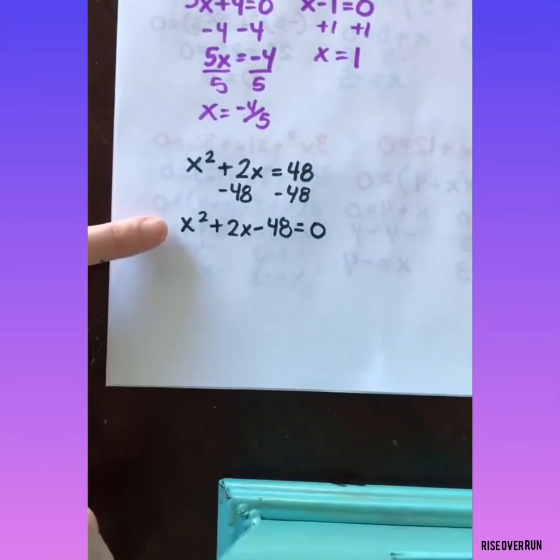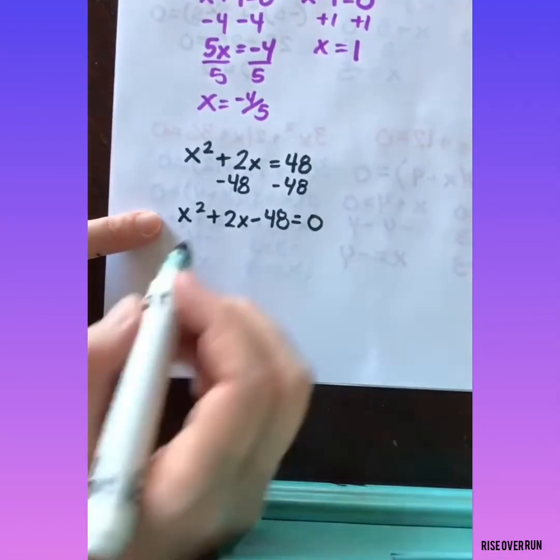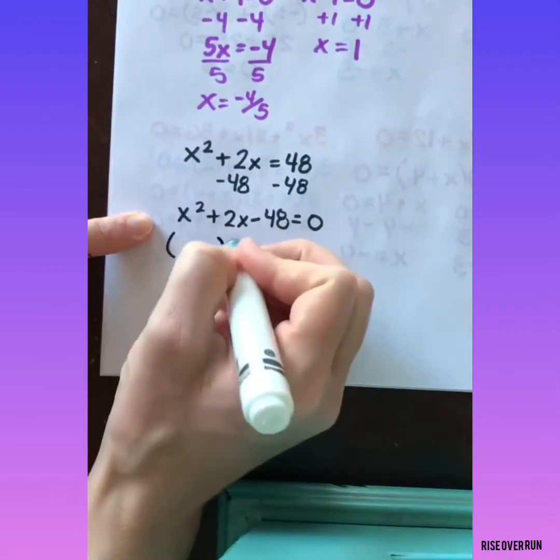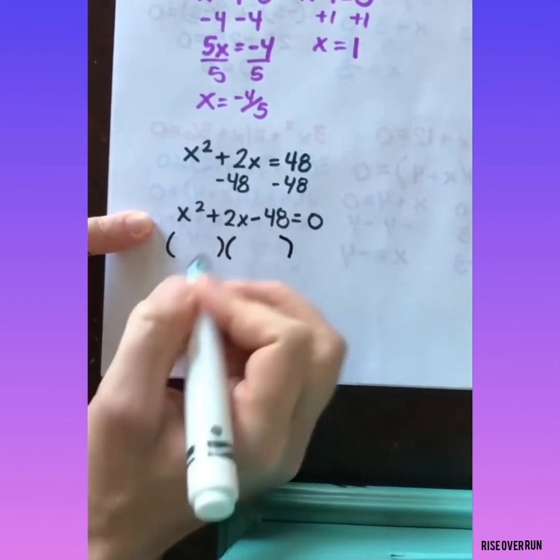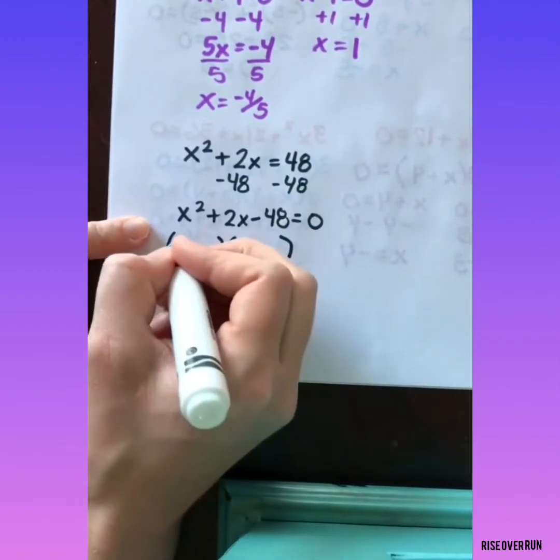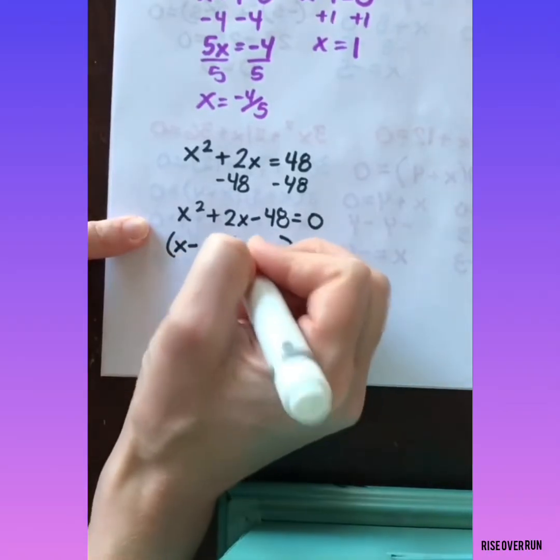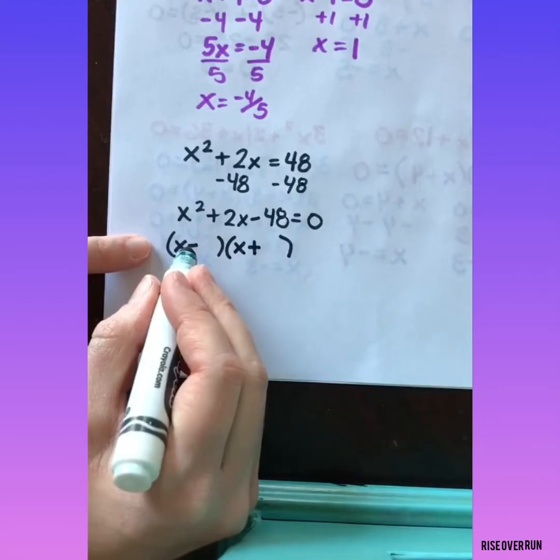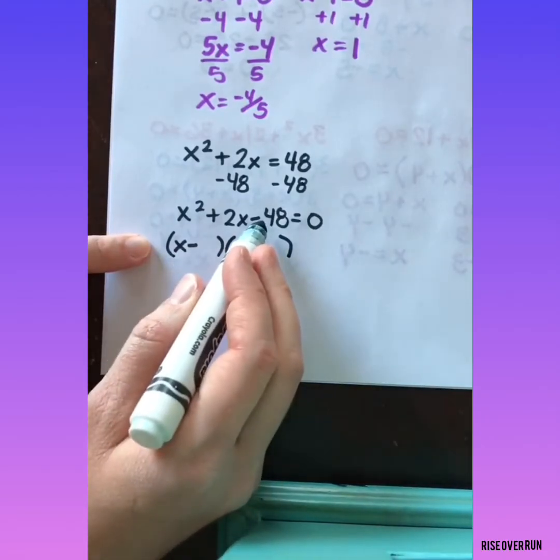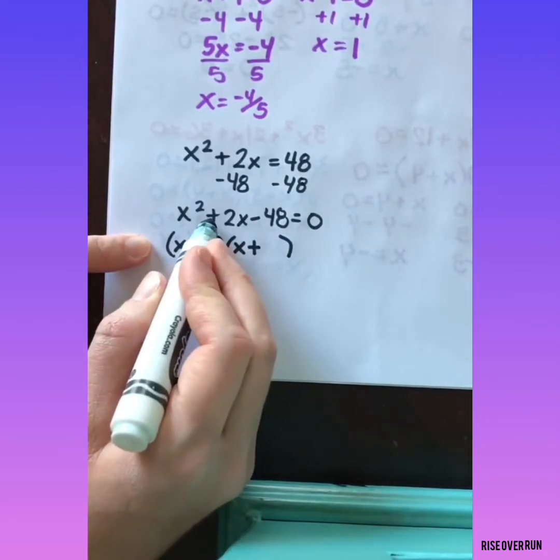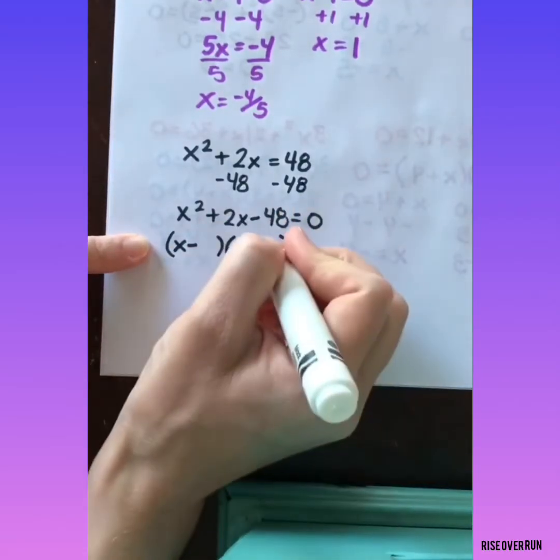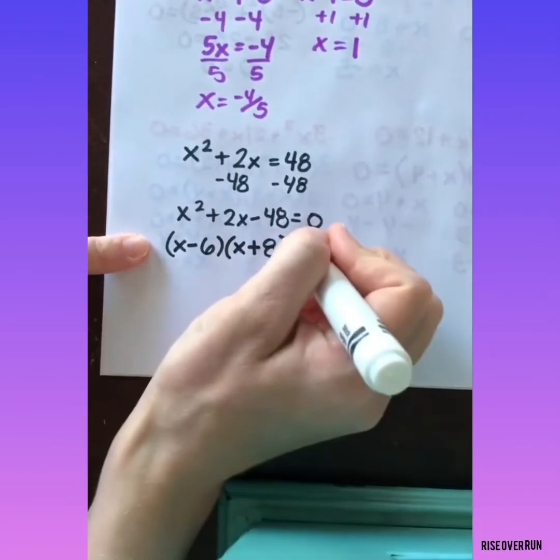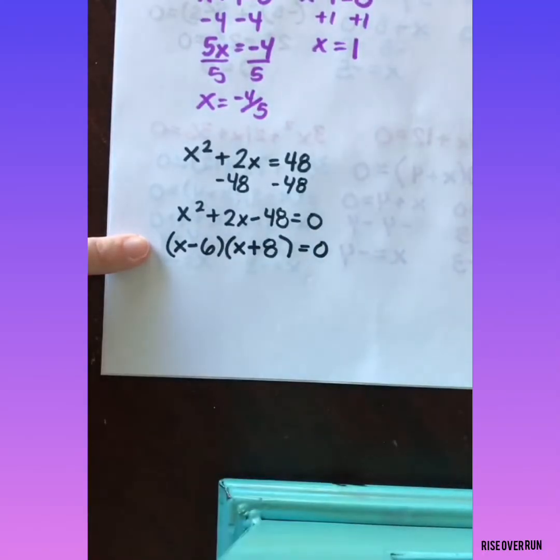And now we'll factor to solve. So we're looking for two numbers that multiply to give us negative 48 and add to give us positive 2. Since we're multiplying to get a negative, we're going to need 1 to be negative and 1 to be positive. 6 and 8 will work. Since we want them to add to give us a positive 2, we'll make 8 positive and 6 negative. Now we can set each of these equal to 0 and solve.